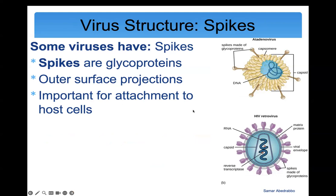Spikes are surface glycoproteins — glyco meaning sugar — and they are outer surface projections. Spikes play an important role in the virus attaching to and entering host cells. For example, coronaviruses have spikes that are used to attach to human respiratory cells. Spikes are very important targets for vaccine development.